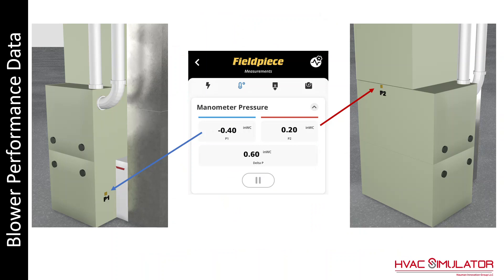P1 is negative pressure in the blower compartment, and P2 is positive pressure below the coil. The recommended place to drill a hole in the furnace is within the top three-quarters of an inch of the furnace, as the heat exchanger is below, so no damage will be done to the heat exchanger.